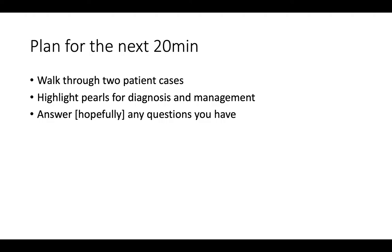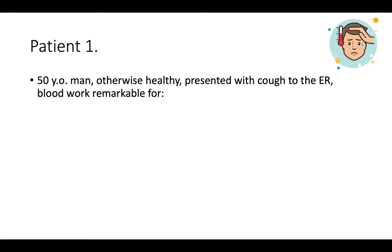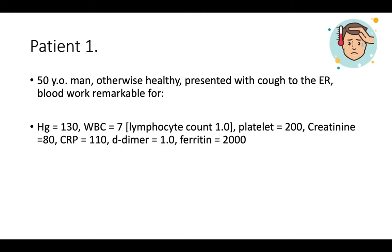For the patient cases, I've changed certain aspects of their demographics so they cannot be identified — everything is completely confidential. The first patient was a 50-year-old man, otherwise healthy, who presented with a cough to the emergency department. Blood work was remarkable for a hemoglobin of 130 (about 13 in American units), a white blood cell count of 7, a lymphocyte count of 1.0, a platelet count of 200, a creatinine of 80 (normal in American units), and elevated CRP, D-dimer, and ferritin.